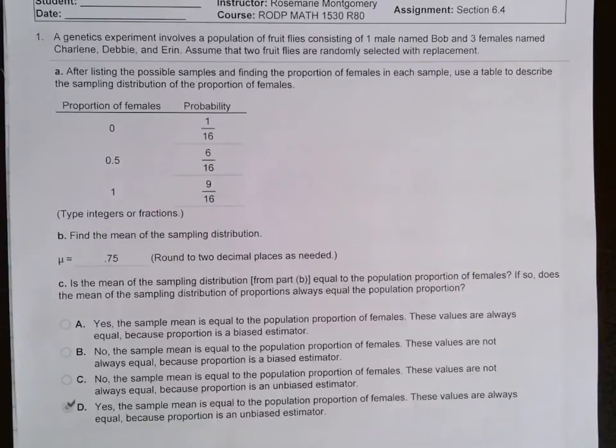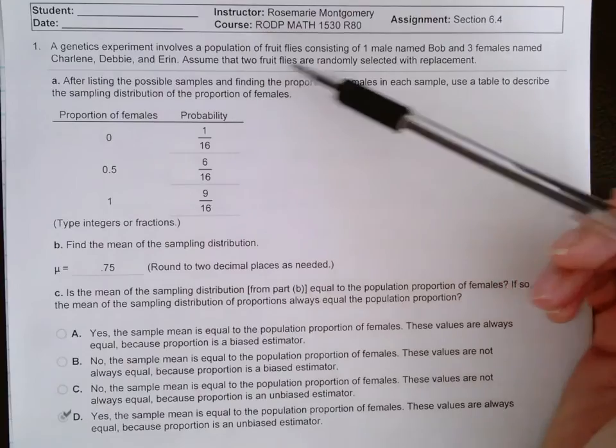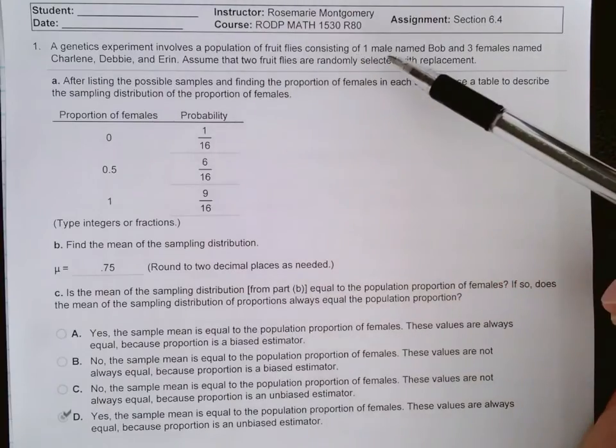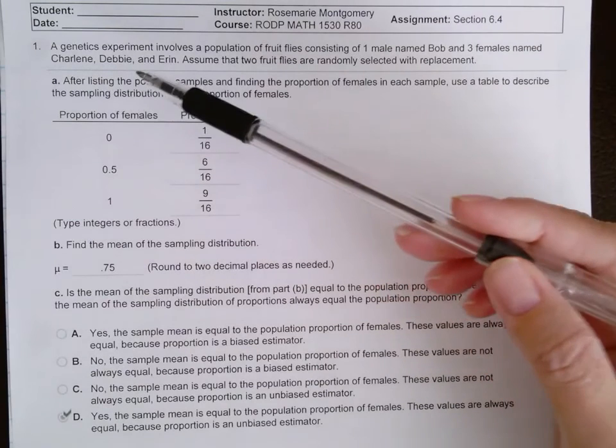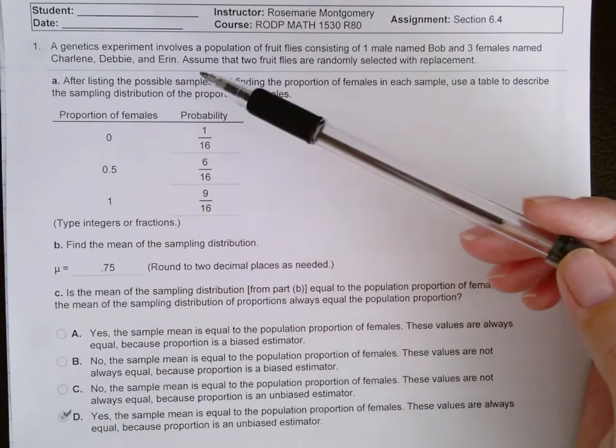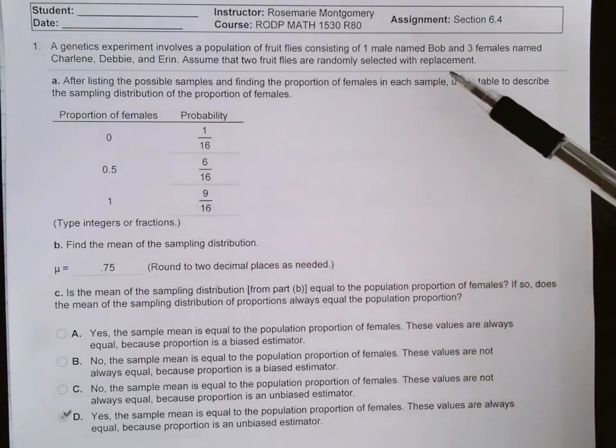Hi class, this is Mrs. Montgomery and I want to go over how to find the solution for this problem involving finding the mean of a sampling distribution. Here is the question: a genetics experiment involves a population of fruit flies consisting of one male named Bob and three females named Charlene, Debbie, and Erin. We are told to assume that two fruit flies are randomly selected with replacement.